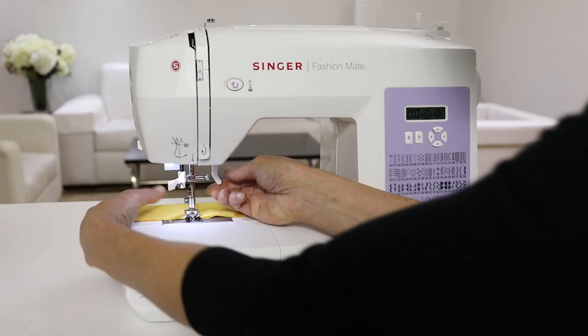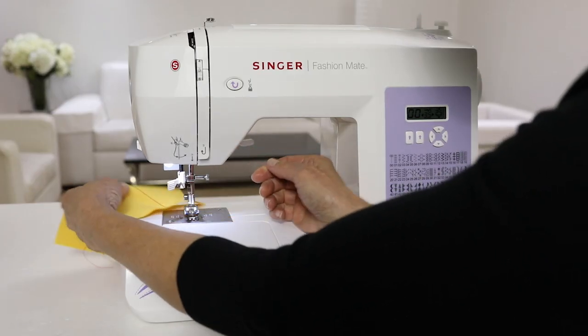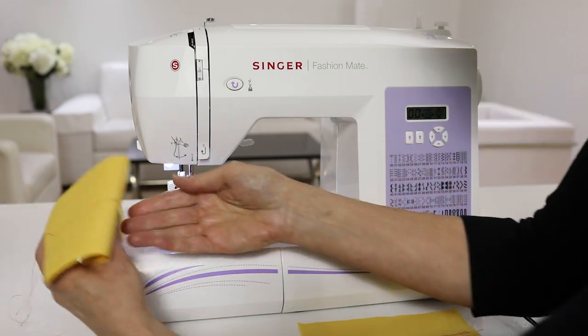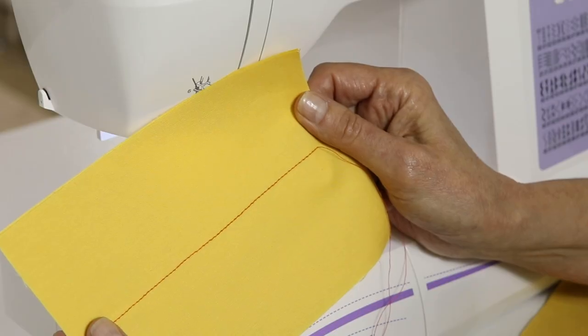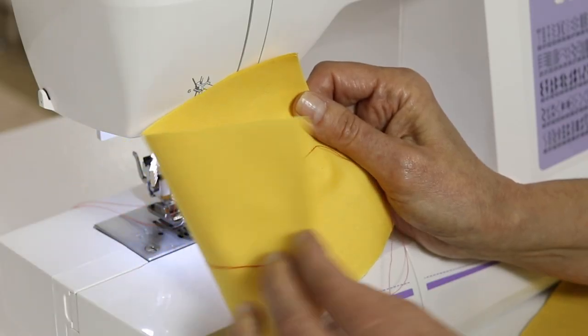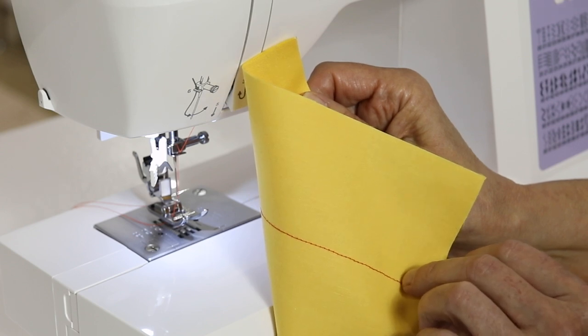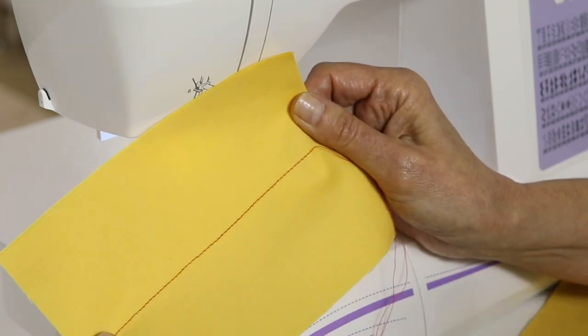When you come to the end of your sewing, raise the presser foot lifter to remove your work from the machine. When I turn this over and look at my stitch, it looks good on both the top and the back. The top looks good and the back looks good.